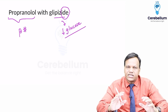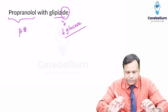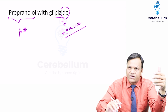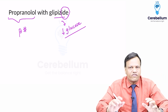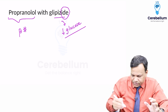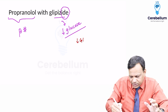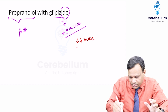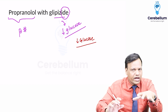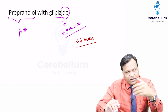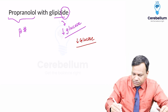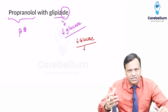We avoid this interaction because whenever a person is taking an anti-diabetic drug and has diabetes, there is a risk of hypoglycemia. Whenever hypoglycemia occurs, the body has a protective mechanism — the person does not die from hypoglycemia because it is an emergency, and hypoglycemia will stimulate the sympathetic system.